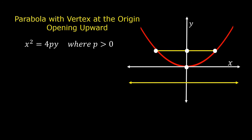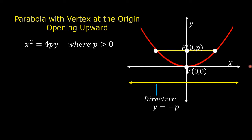In this figure, this is the vertex of the parabola — it is the origin, with coordinates (0, 0). This is the focus of the parabola; the coordinates of the focus are (0, p). This yellow line is the directrix, and the equation of the directrix is y is equal to negative p.